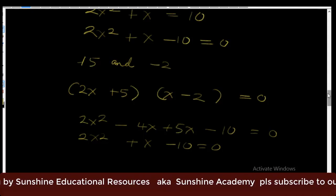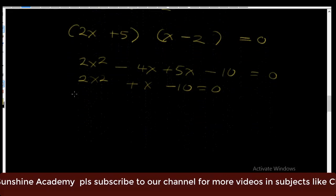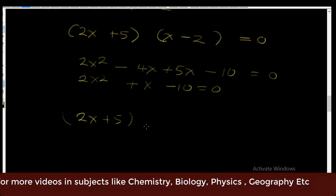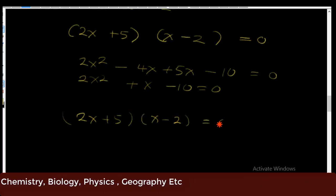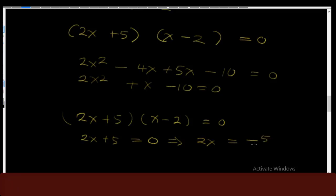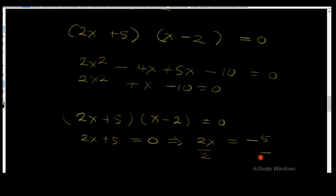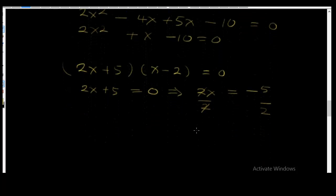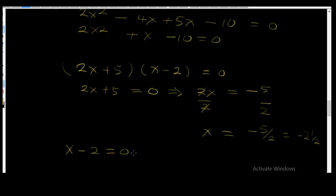The factors are (2x + 5)(x - 2) = 0. So 2x + 5 = 0, which means 2x = -5. Dividing both sides by 2, x = -5/2, which equals -2 and a half. For the second bracket, x - 2 = 0, therefore x = +2.